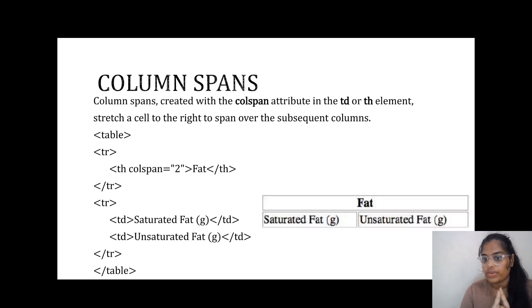Column span - here for both saturated fat and unsaturated fat, the common heading for both of them is fat. So we use colspan equals two. The particular colspan fat heading will be extended to two rows. That is the meaning of colspan and rowspan.